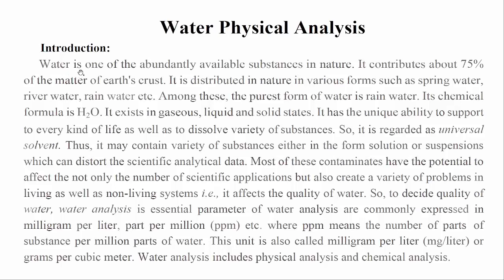Introduction: Water is one of the abundantly available substances in nature. It contributes about 75% of the matter of Earth's crust. It is distributed in nature in various forms such as spring water, river water, rain water, etc. Among these, the purest form of water is rain water. Its chemical formula is H2O.